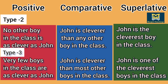You can notice the difference between type 2 and type 3. In type 2, the positive sentence starts with 'no other'; type 3 positive starts with 'very few.' In type 2 comparative, 'than any other' is used. 'Than most other' is used in type 3 comparative. In type 2 superlative, 'the EST' is used; in type 3 superlative, 'one of the EST' is used.